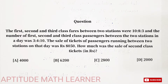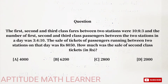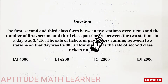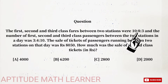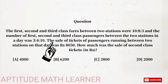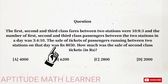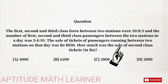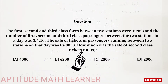Hello and welcome to my YouTube channel Aptitude Math Learner. Today's question: the first, second, and third class fares between two stations are in the ratio 10:8:3, and the number of first, second, and third class passengers in a day is in the ratio 3:4:10. The total sale of tickets between the two stations on that day was 8050 rupees.